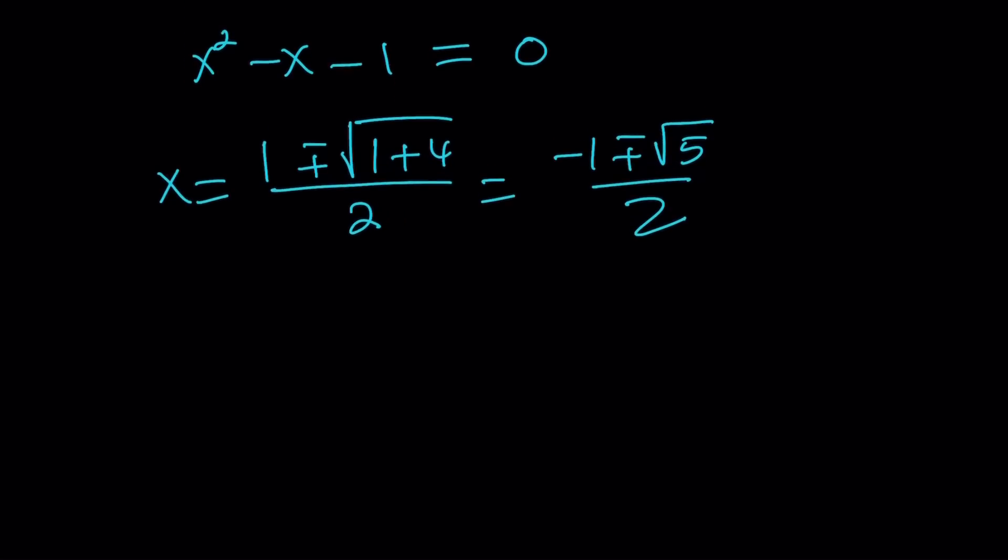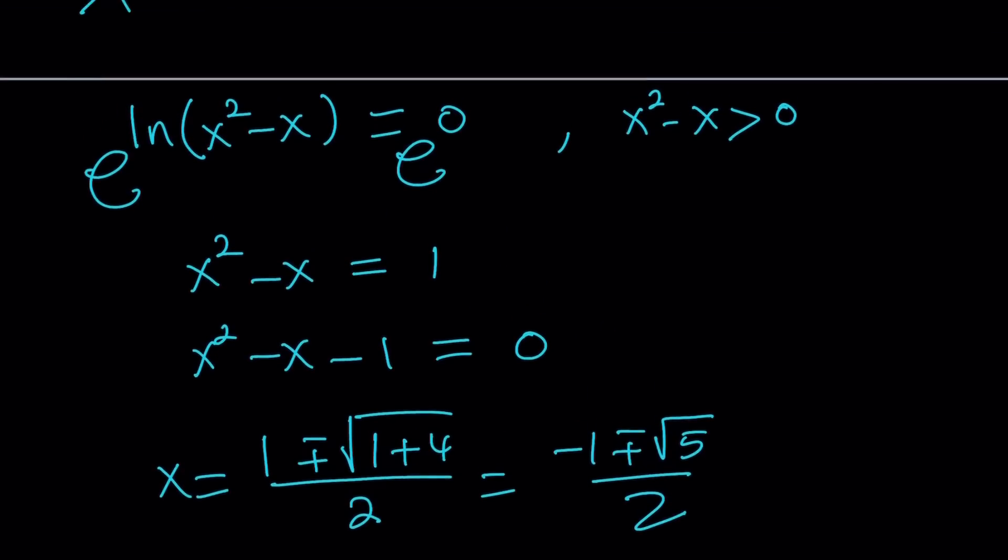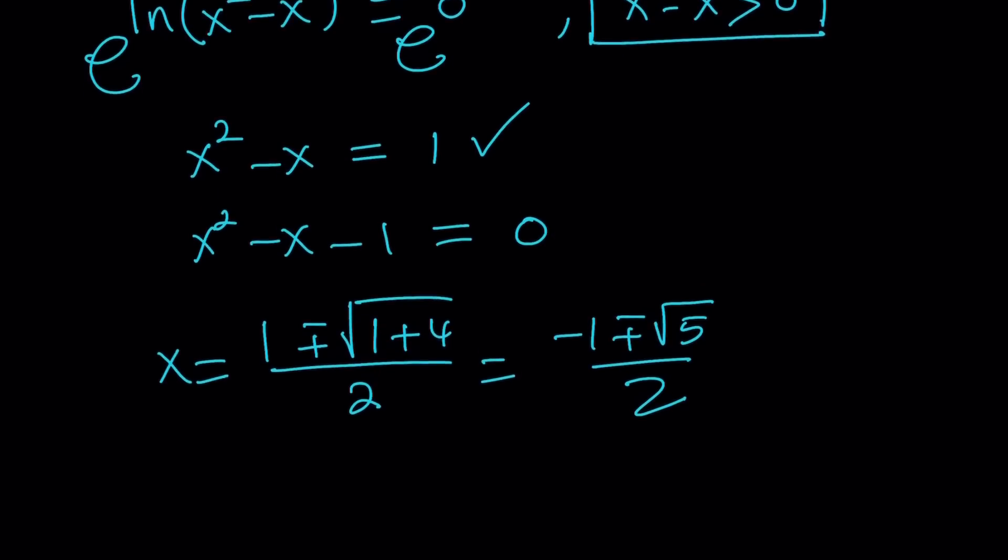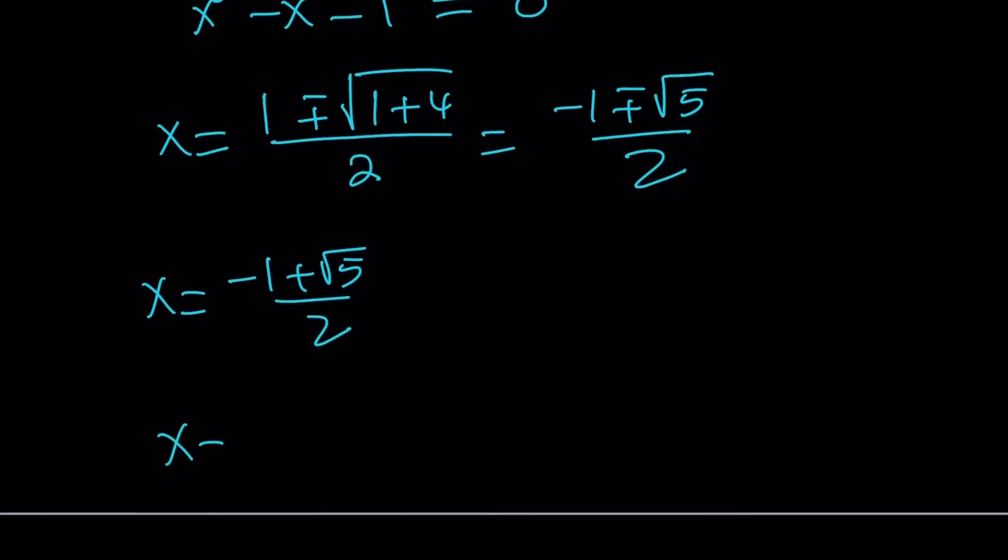So it looks like there are two solutions. And are they both valid? Let's go ahead and check. Notice that we had to assume for real solutions x squared minus x is greater than 0. But when x squared minus x equals 1, it's automatically greater than 0 because 1 is greater than 0. So both of these solutions are going to satisfy the domain. So x equals negative 1 plus root 5 over 2, and x equals negative 1 minus root 5 over 2.